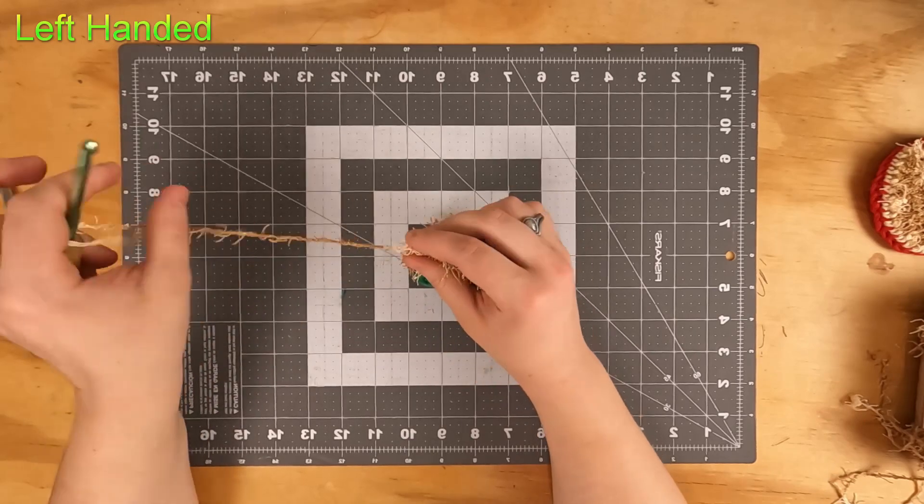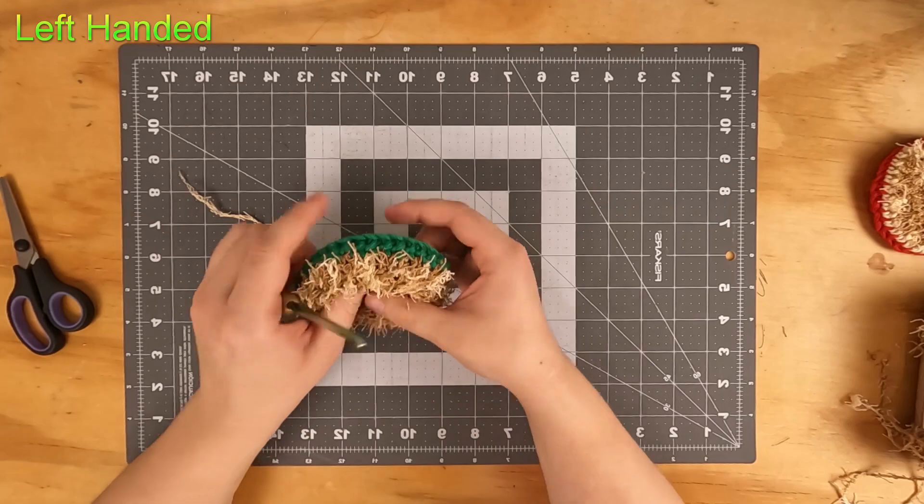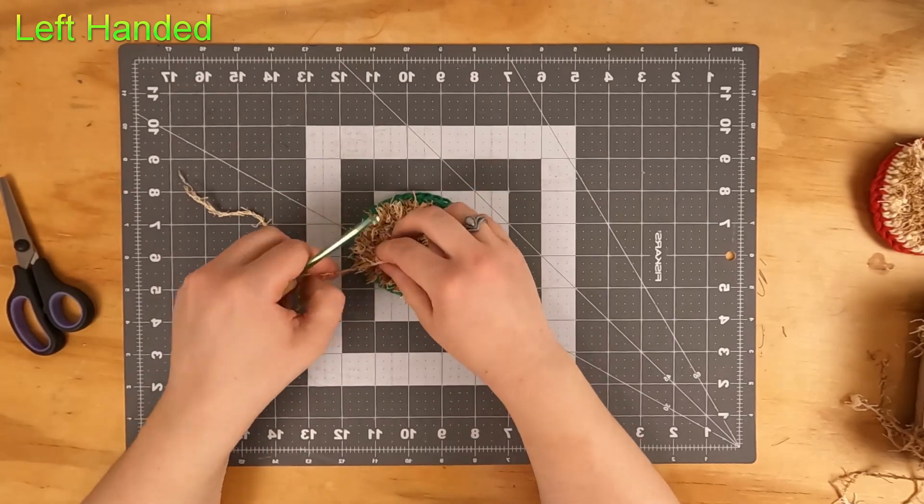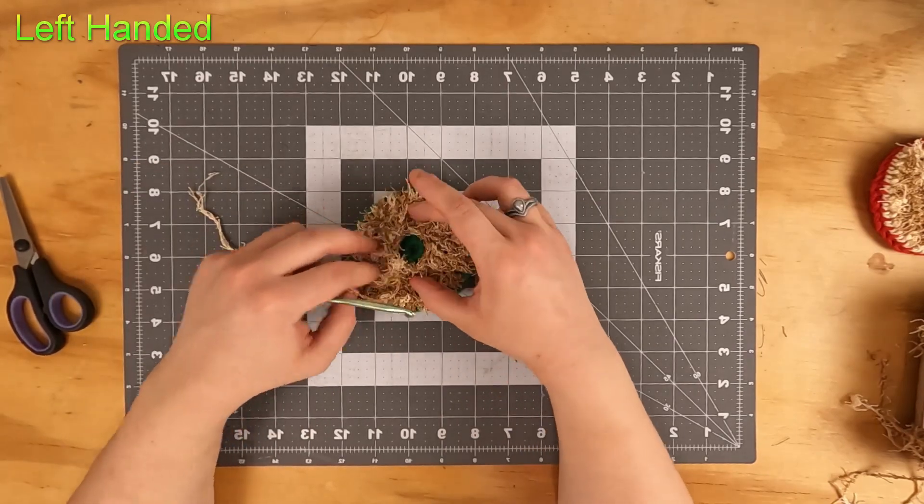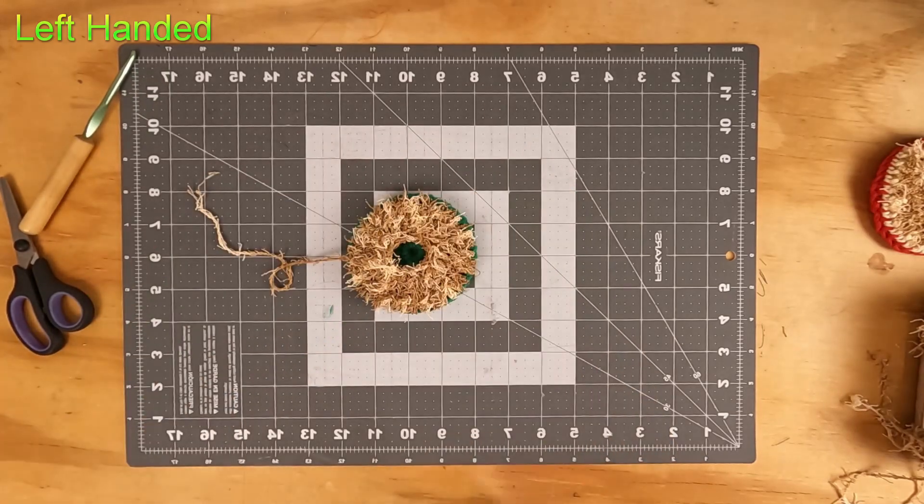I'm going to trim off the yarn and then gently pull it through, trying to keep this cinched down but also not rip the yarn, because this stuff is prone to tearing apart at that point in the project. So now we've got this little gap right there. We're going to grab our yarn needle.